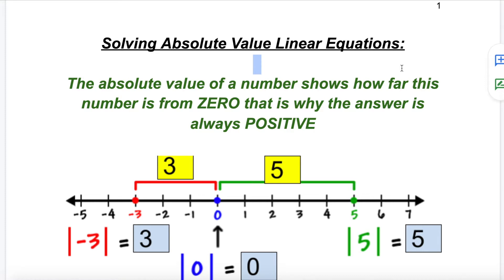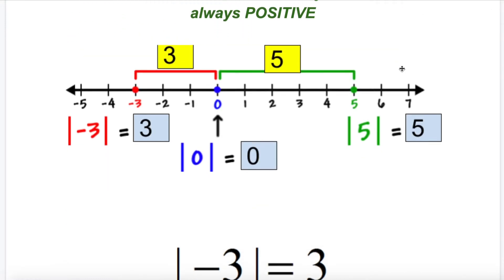The absolute value of negative 5 is positive 5 — that means negative 5 is 5 units away from zero. The absolute value of 10 is 10. In words, absolute value changes all negative signs to positive, and positive signs stay positive. So you cannot say the absolute value of 3 is negative 3. It simply removes the negative sign. The absolute value of negative 100 is positive 100, and the absolute value of positive 100 is also positive 100.